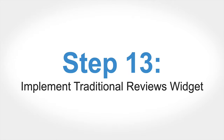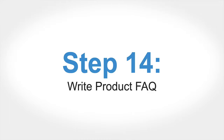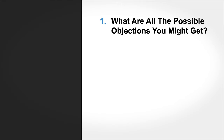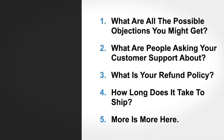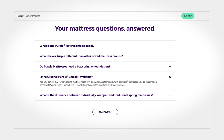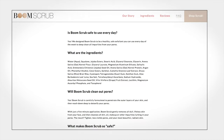Step 13: implement a traditional reviews widget—Yotpo, Stamped, or similar. I'm a big fan of Stamped if you're on Shopify. Step 14: product FAQ. FAQs get engaged with very heavily on the page. Put in all the objections people might have—what questions are people asking your customer support? Include your refund policy, shipping times, and anything else someone might ask about the product. More is more with the FAQ. Only about 10% of people consume it, but those are the people who are going to buy.